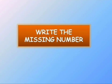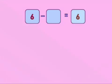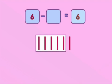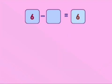Write the missing number. Our question is 6 minus blank equals 6. We have to fill this blank space. We will draw 6 lines: 1, 2, 3, 4, 5, 6. We will mark 6 lines and remove them: 1, 2, 3, 4, 5, 6. After removing, how many lines are there? There is no line — it means 0. So 6 minus 0 equals 6.